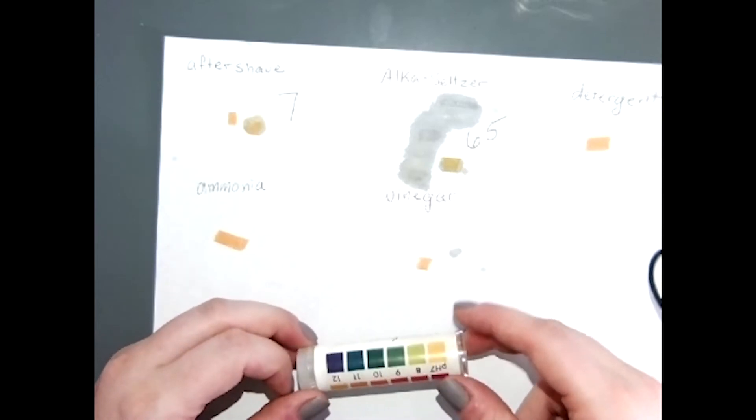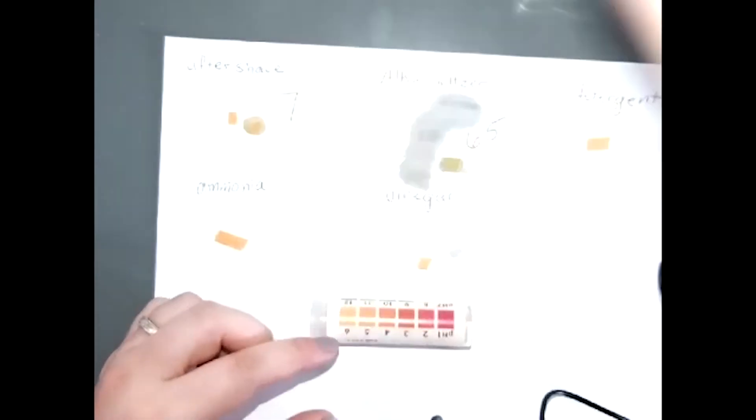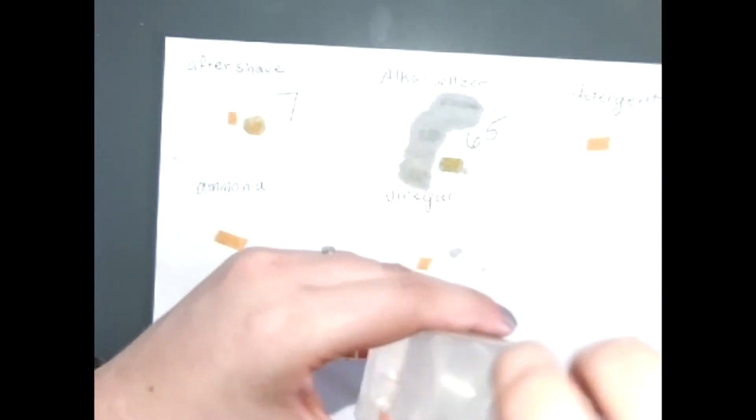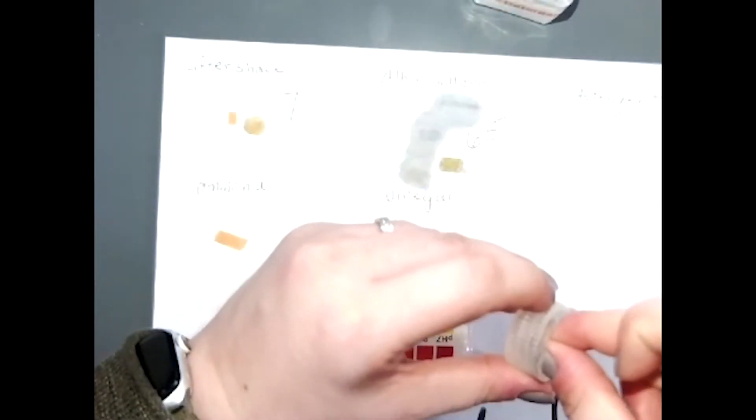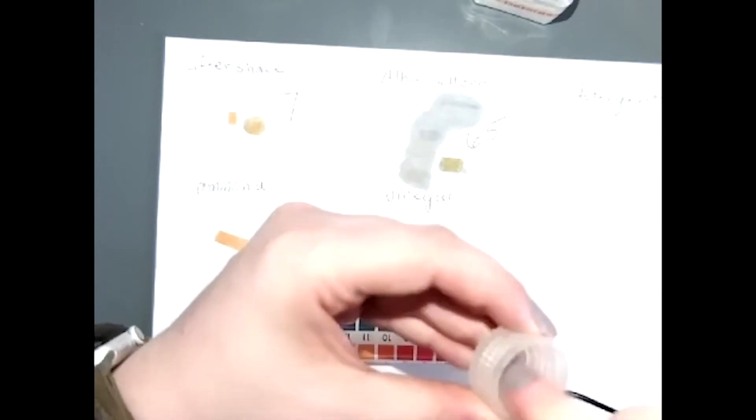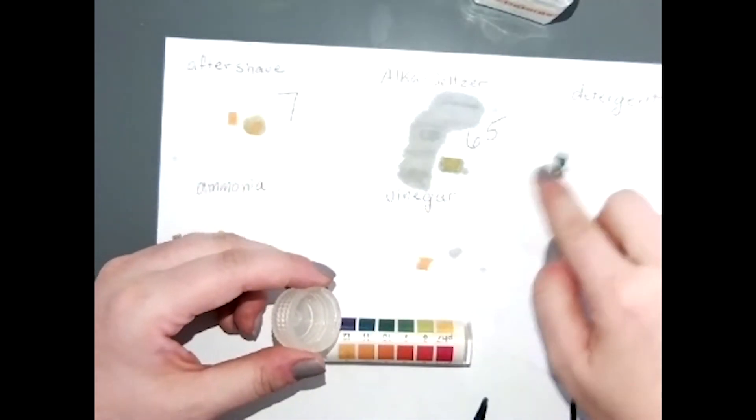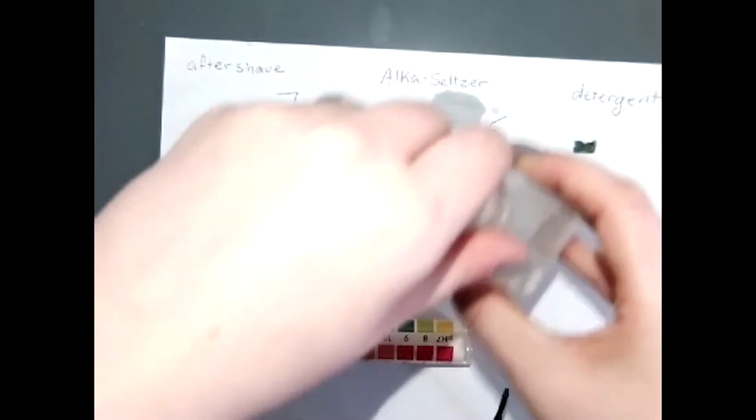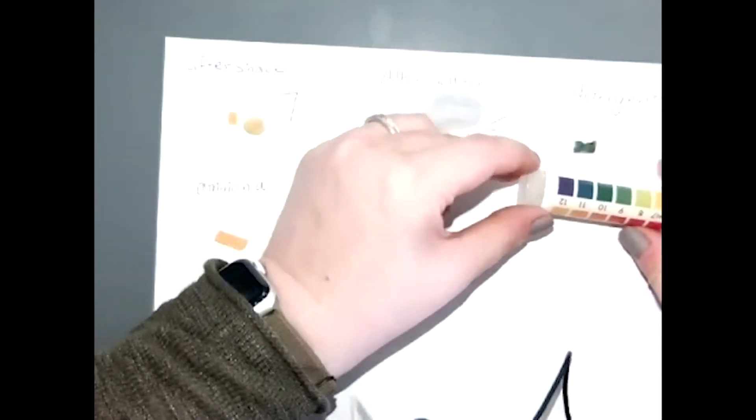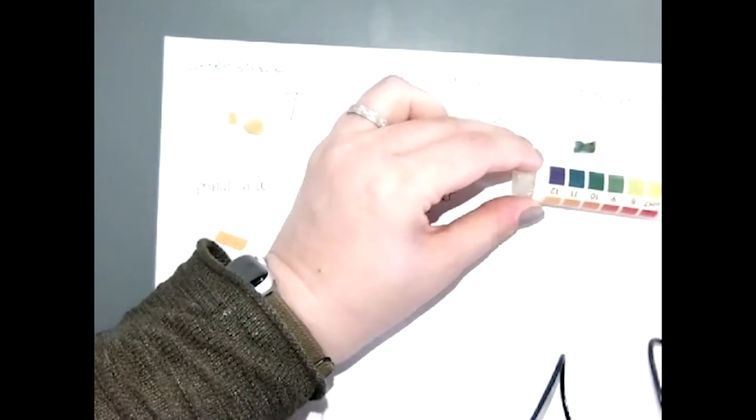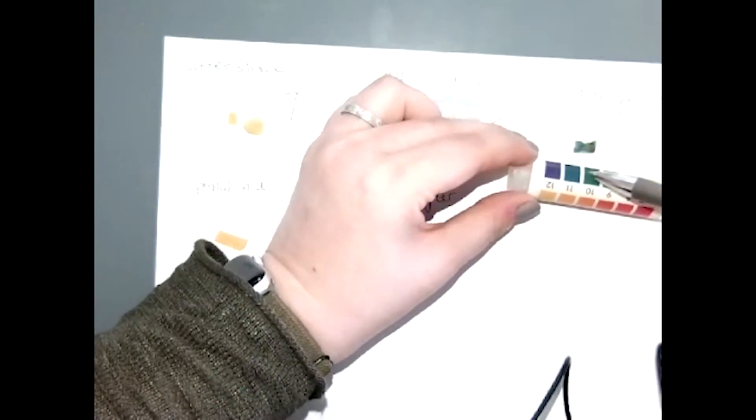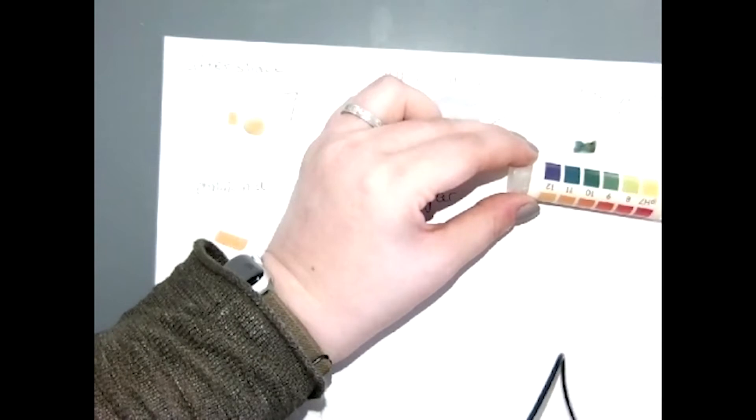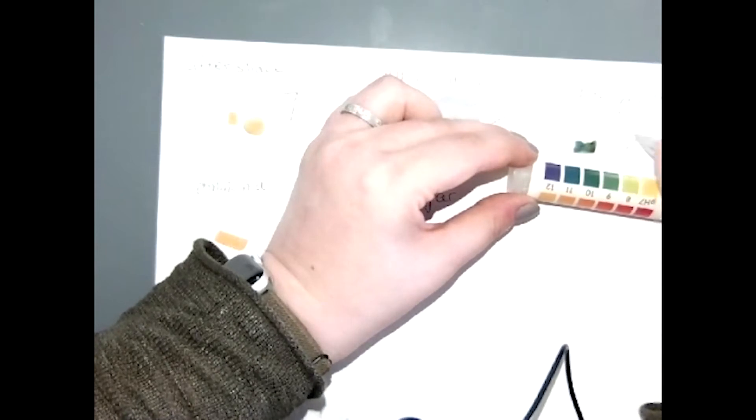Then we have detergent. That is fairly dark. I would say that that is somewhere between the 10 and the 11 in color, so I'll call that 10 and a half.